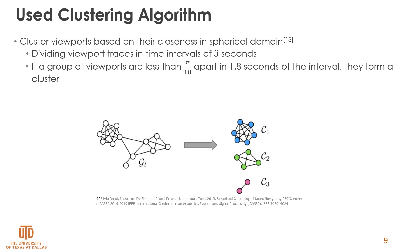For clustering, we use the method proposed by Rossi et al. The advantage of this method is that it creates clusters based on the closeness of viewports on a sphere. In specific time intervals, if a group of viewers are less than one-tenth of pi radians apart for more than 60% of the interval, they are considered a cluster. The problem of finding clusters is equivalent to finding the maximal clique among viewports. This method considers closeness on the sphere and all components of the viewport are taken into account.